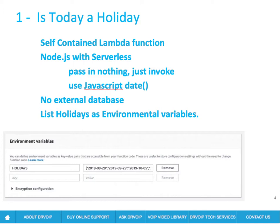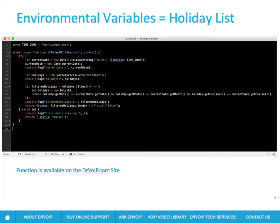The second part of this was that we wanted no database. I don't want to have to create a DynamoDB database with a list of holidays. What we decided to do was put the holiday list as a string of dates — an array object, if you will — in the environmental variables of the Lambda function. So the whole function lives entirely by itself with no external database; the database is basically the environmental variables.